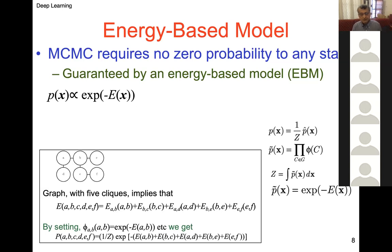The energy-based notation: suppose you have a Markov network A, B, C, D, E, F with the connections shown. There are five cliques in this, implying the energy model for A, B, C, D, E, F has five terms: E(A,B), E(B,C), E(A,D), E(B,E), E(E,F).